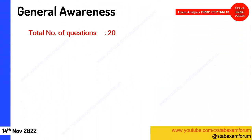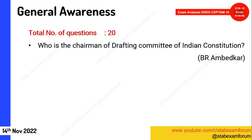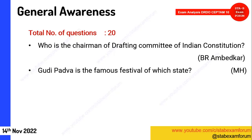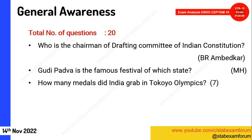Coming to General Awareness — also very easy compared to previous shifts. Who is the chairman of the drafting committee? Simple — B.R. Ambedkar. Goudi is a part of which festival and which state? It is Maharashtra. Sports-related questions about medals and tallies — you should remember these for all further examinations. This time they asked about Tokyo Olympics; last time it was Commonwealth Games.